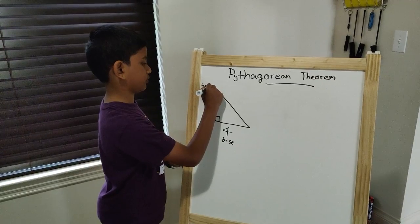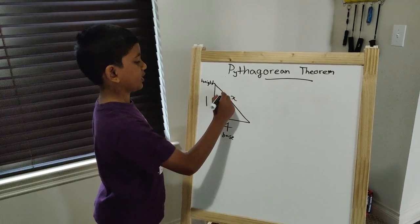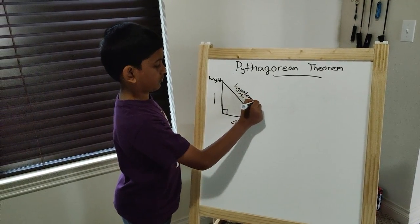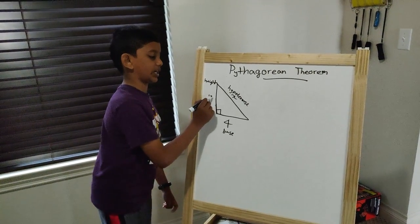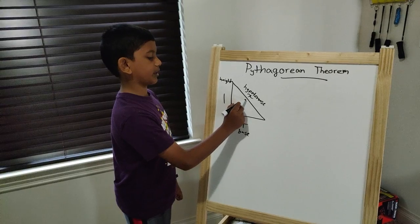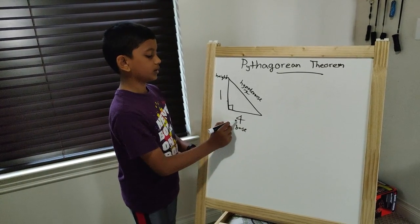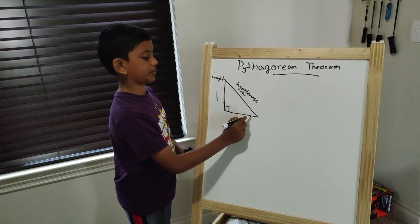I will leave it as height. And this x is the hypotenuse. The hypotenuse is opposite the base and the height. You can tell because the hypotenuse is opposite from this 90-degree angle. This 4 is opposite from this angle, and this 1 is opposite from here.